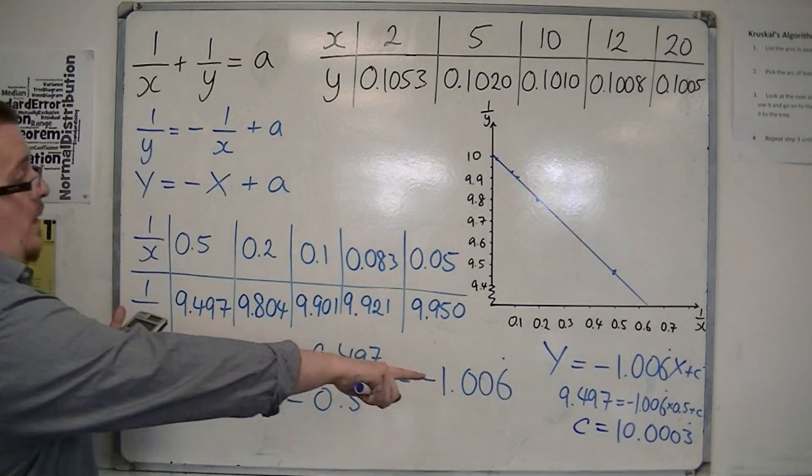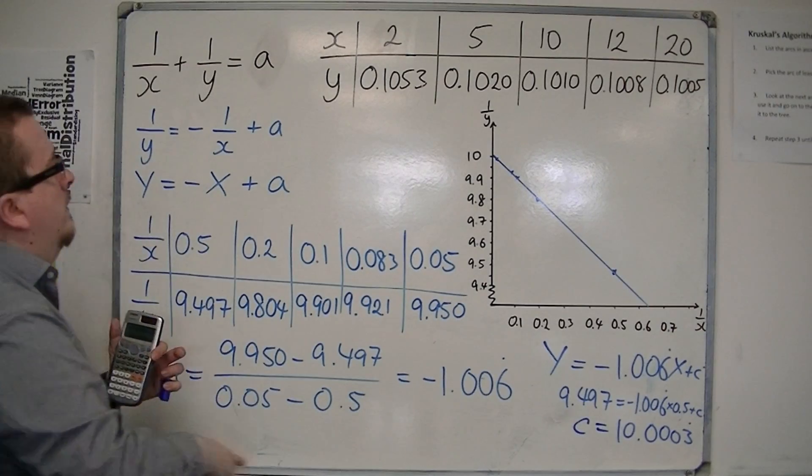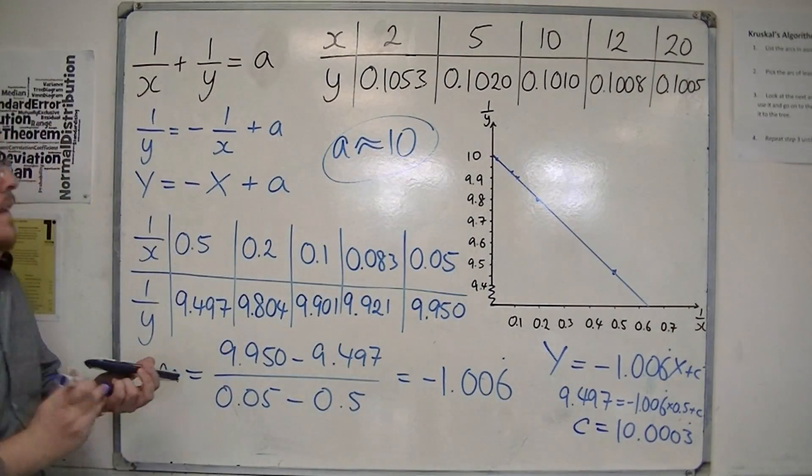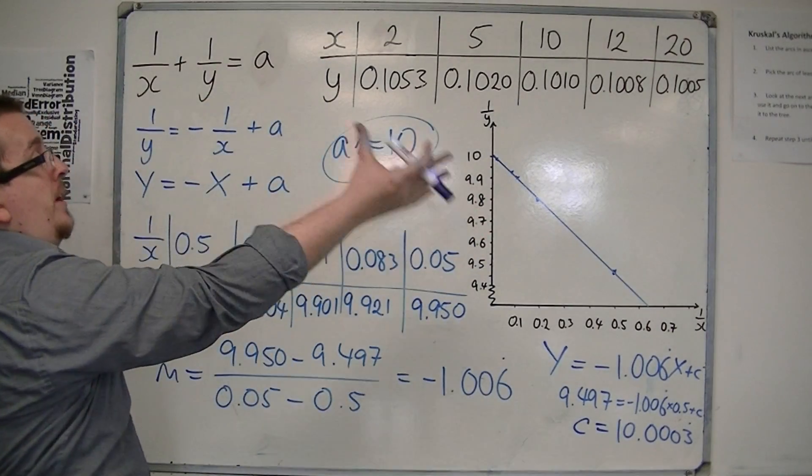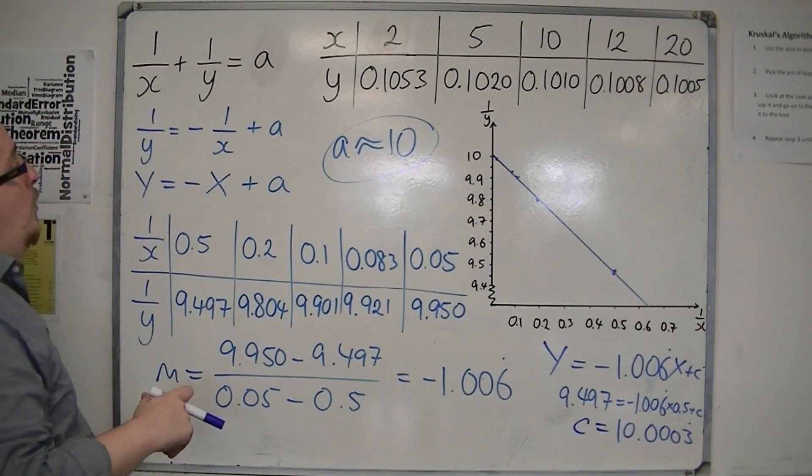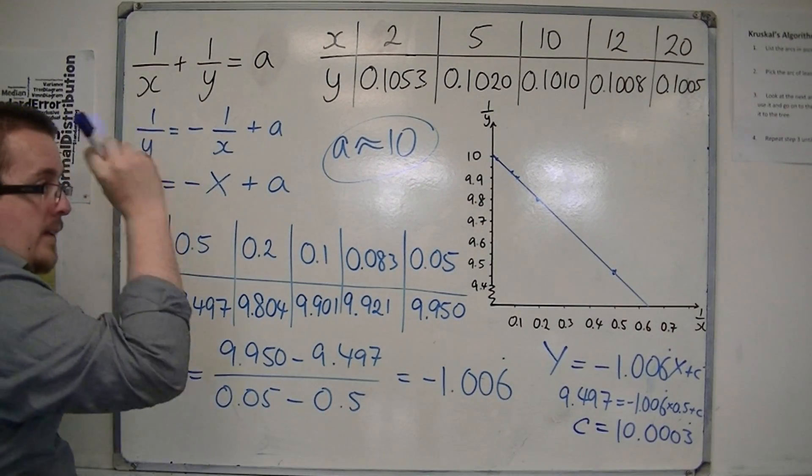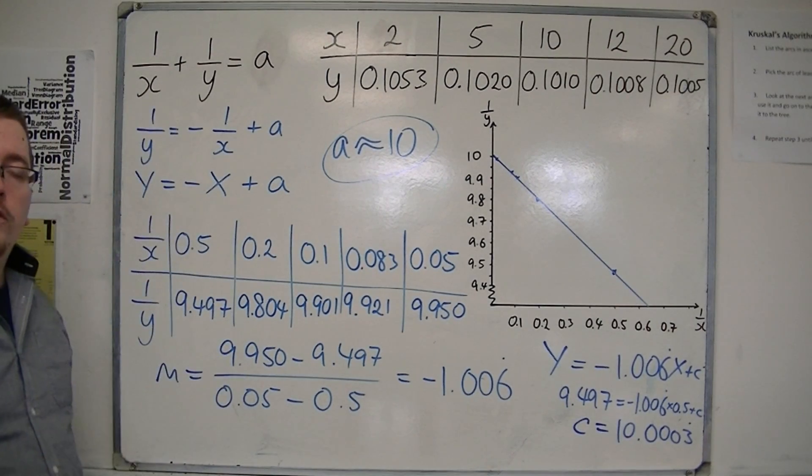So, yes, our value of a is approximately 10. And that's really what we wanted. So, you can see that from the experimental data, if you have a concept of what the linear law should be, or what the graph should be, then we can plot it, get ourselves a straight line graph, and then estimate the value of a, and that was what we really needed to do here.